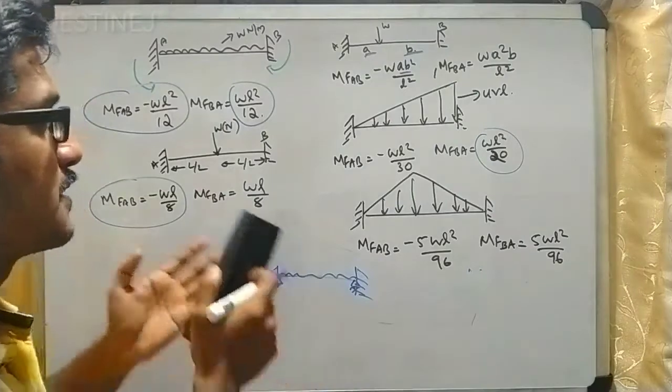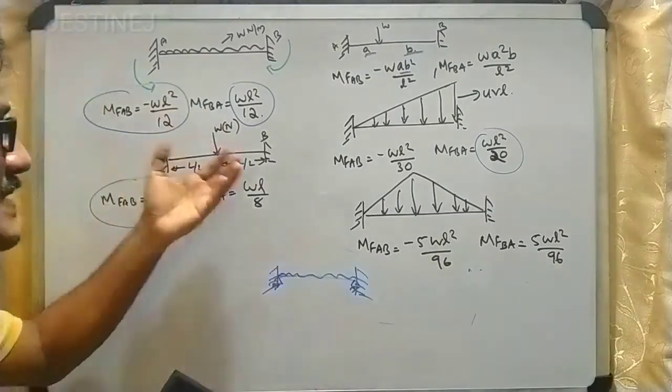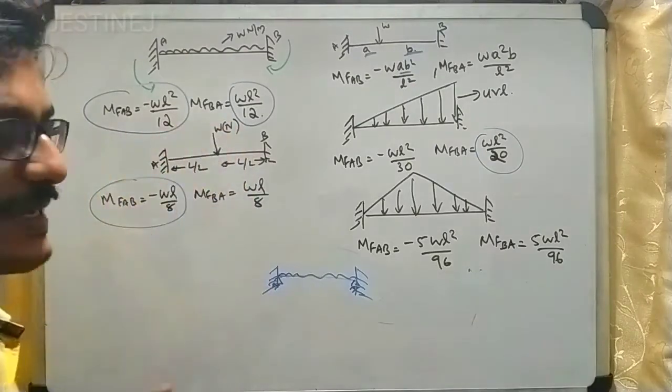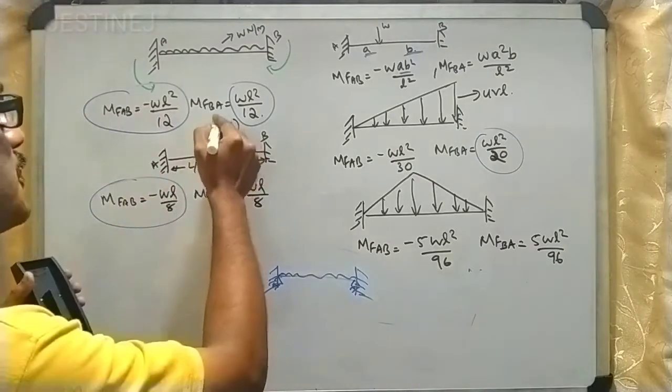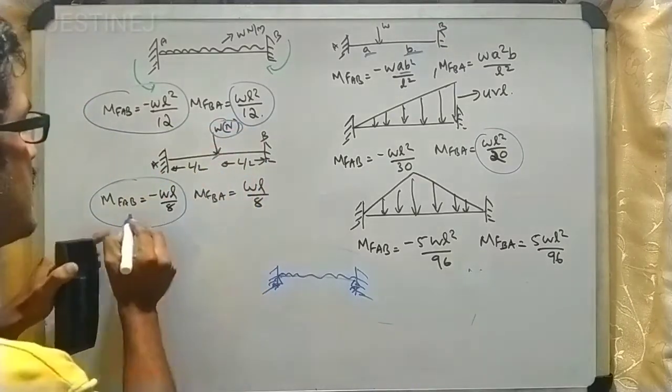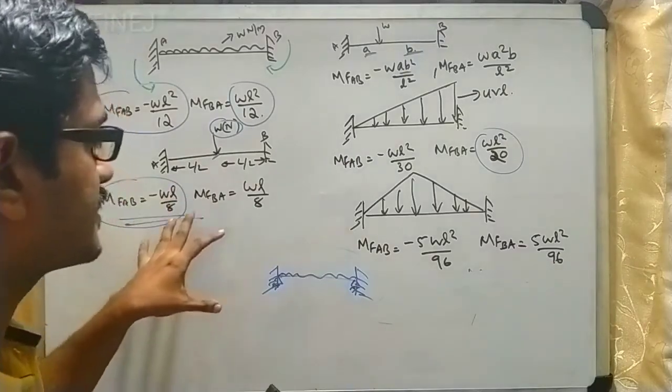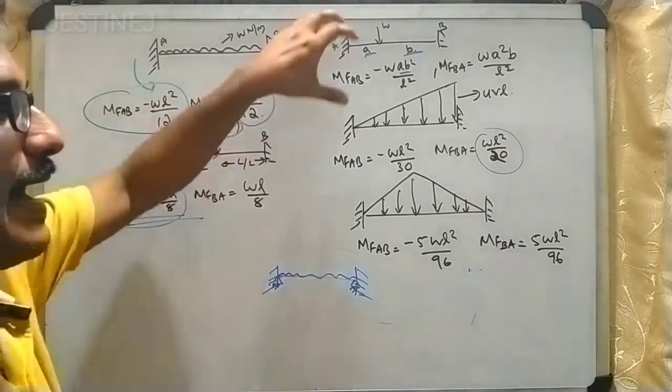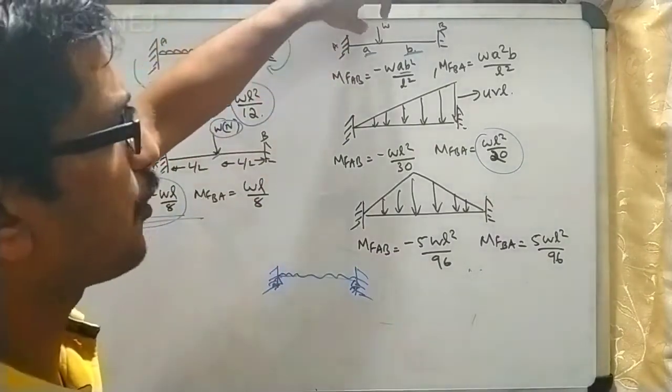The second condition or second case is when a point load is acting at the center of the beam. That means this W is acting at the center, then the fixed end moment value is going to be minus WL by 8, and here it is clockwise then it is WL by 8.